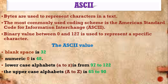For lowercase alphabets — small a to small z — ASCII codes start from 97 to 122. The ASCII code for small a is 97, small b is 98, small c is 99, and so on up to z. For uppercase alphabets, the ASCII code for capital A is 65, capital B is 66, and so on. For each and every character on the keyboard, it has an ASCII code. Through this coding system, the computer understands our language.